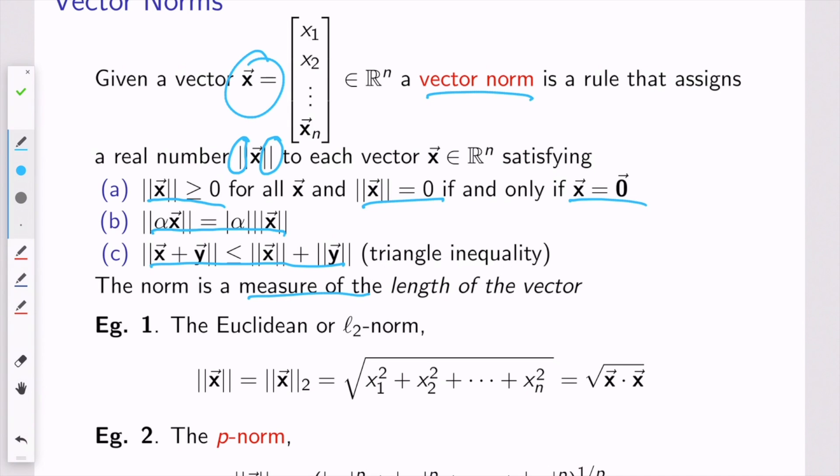But there are, of course, many different ways of talking about that. The one that's probably most familiar is this kind of Euclidean, Pythagorean theorem-like length. We sometimes call this the 2 norm, or the L2 norm.